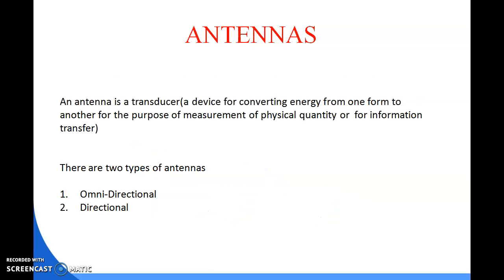Next we come to antennas. An antenna is a device for converting energy from one form to another for the purpose of measurement of a physical quantity or for information transfer. There are two types of antennas: one is omnidirectional and the second is directional. An antenna is also known as an aerial.